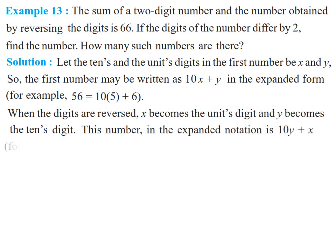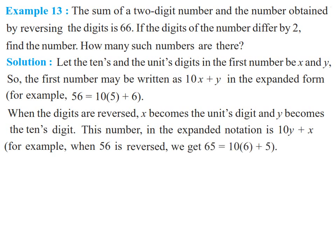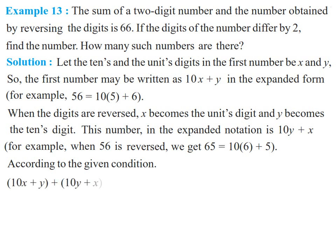The reversed number can be written as 10y plus x. For example, when 56 is reversed it becomes 65, written as 10 into 6 plus 5. According to the given condition, the sum of both numbers — 10x plus y and 10y plus x — is 66. So 10x plus y plus 10y plus x equals 66, giving 11x plus 11y equals 66. Dividing by 11, x plus y equals 6, and that is equation 1.